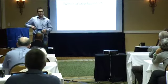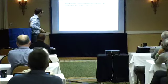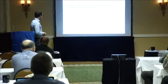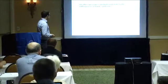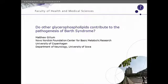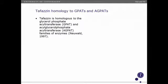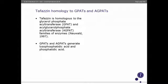We're new to the field, so I'm sure the talk will be riddled with defects, which I hope you'll point out to me. The gist is: do other glycerophospholipids contribute to the pathogenesis of Barth syndrome? I'll start with a little description about tafazin structure, particularly the homology to the GPAT and AGPAT family of enzymes — glycerol phosphate acyltransferases and acylglycerol phosphate acyltransferases. This was shown in 1997 by Andrew Neuwald.